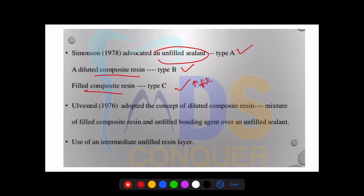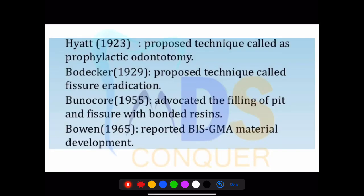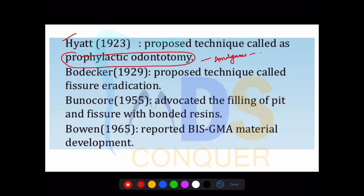There are a few scientist names to note. Prophylactic odontotomy was given by Hyatt, and the restorative material used initially was amalgam, followed by final restoration with oxyphosphate cement. Fissure eradication was given by another scientist — please make note of these scientist names as they are frequently asked questions.